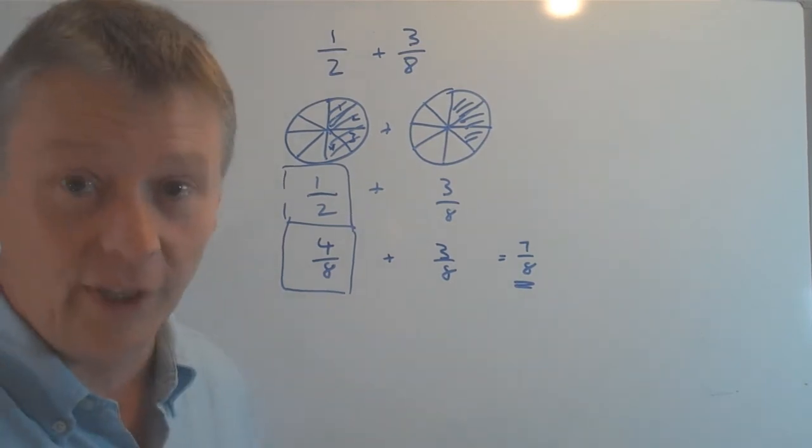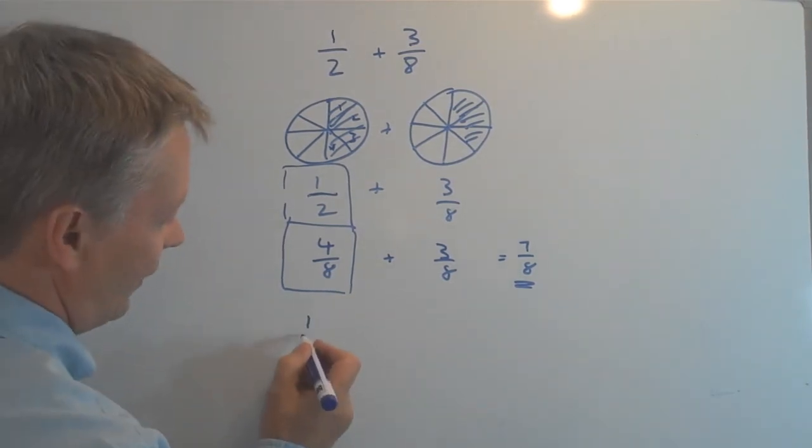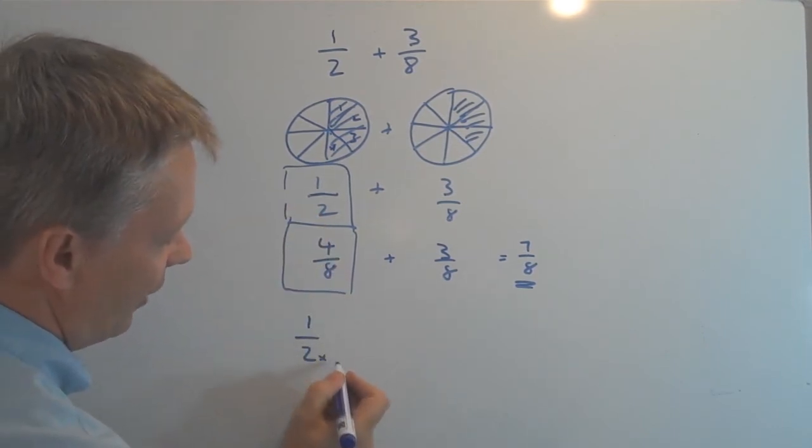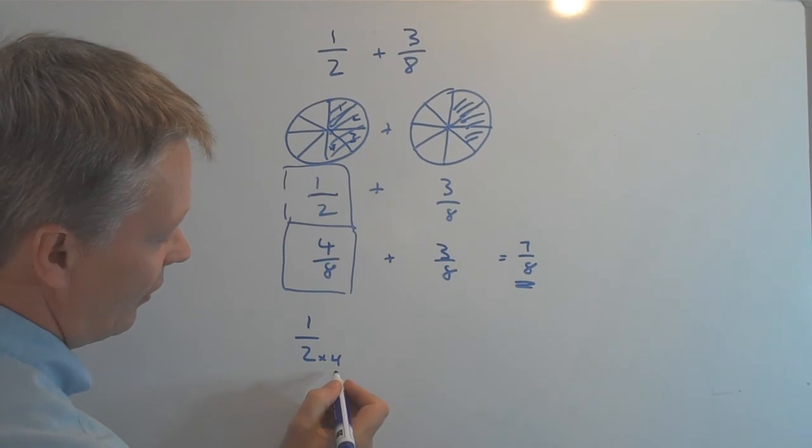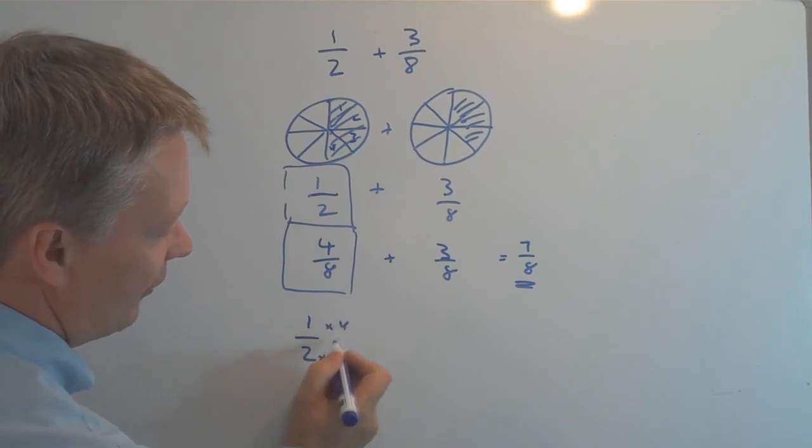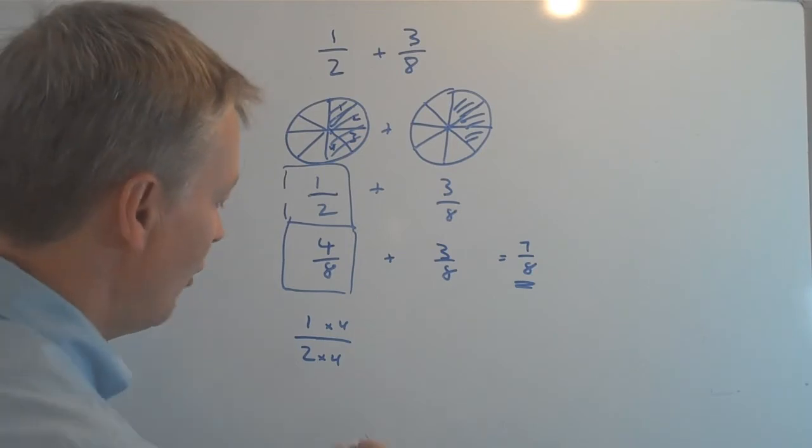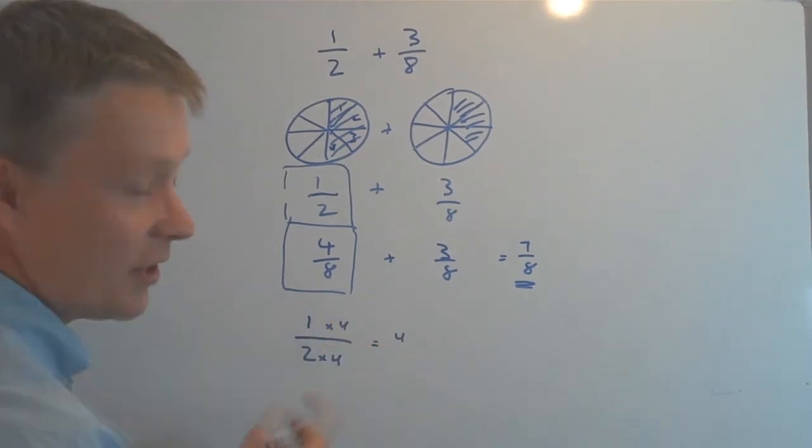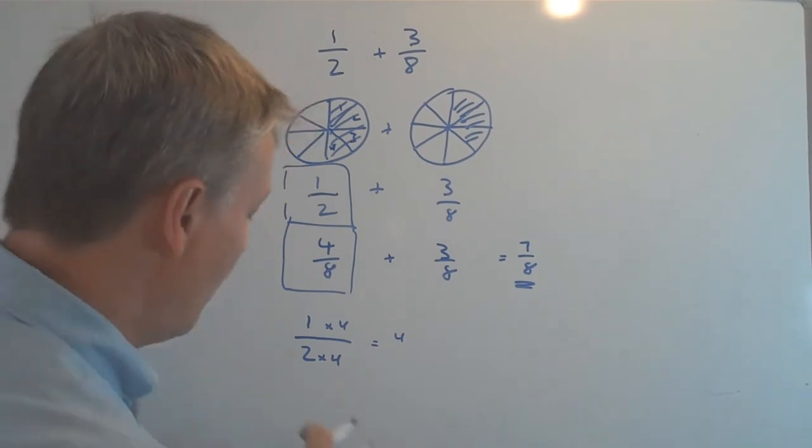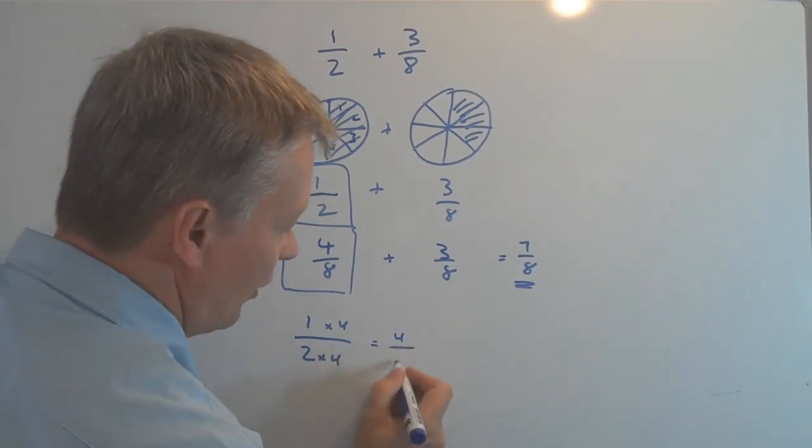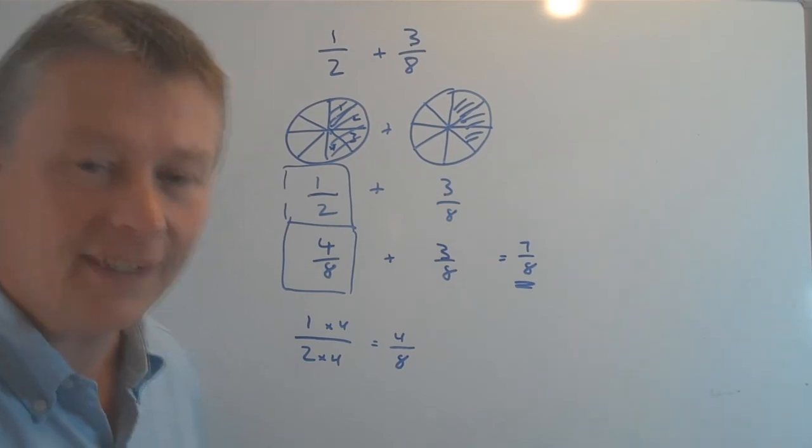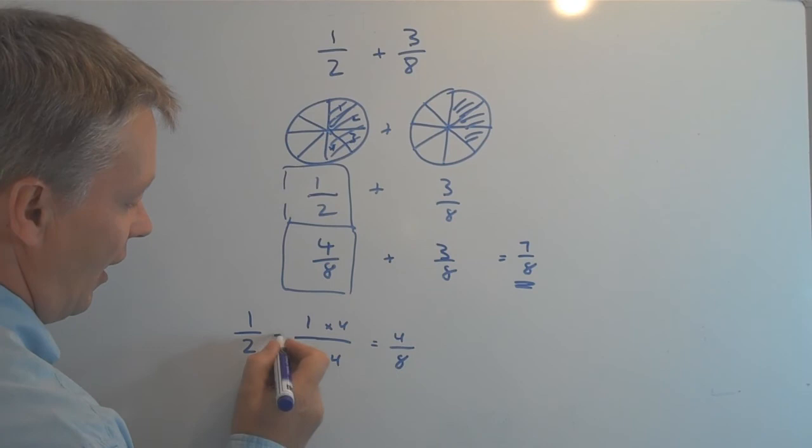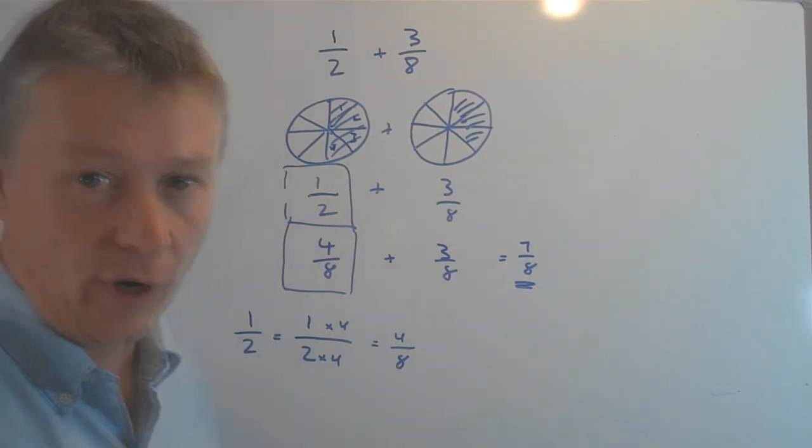Just very briefly, what we've done is we've said, well actually, that half at the top, if I multiply the bottom by four, I must multiply the top by four. So in other words, I've now got four at the top, because one times four is four, and then I've got two times four at the bottom, which is eight. So the direct equivalent fraction of one half is four over eight.